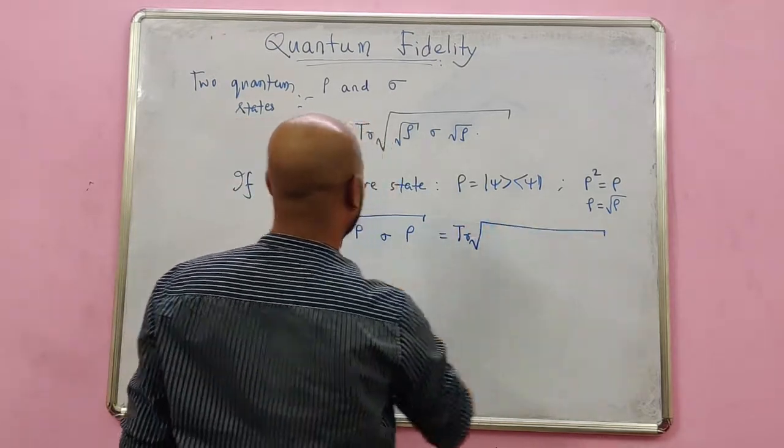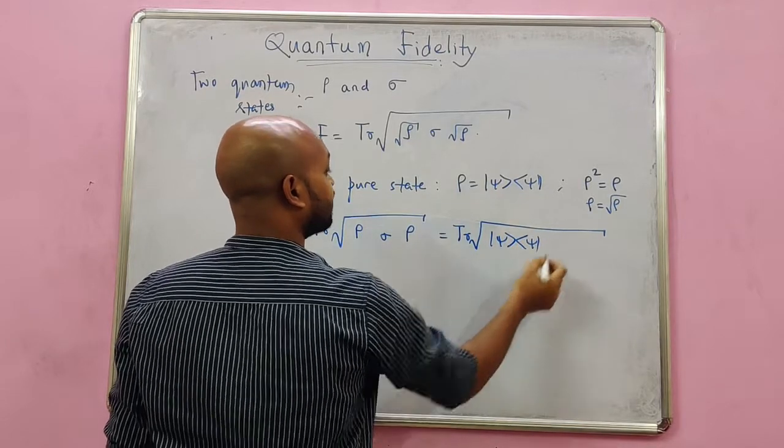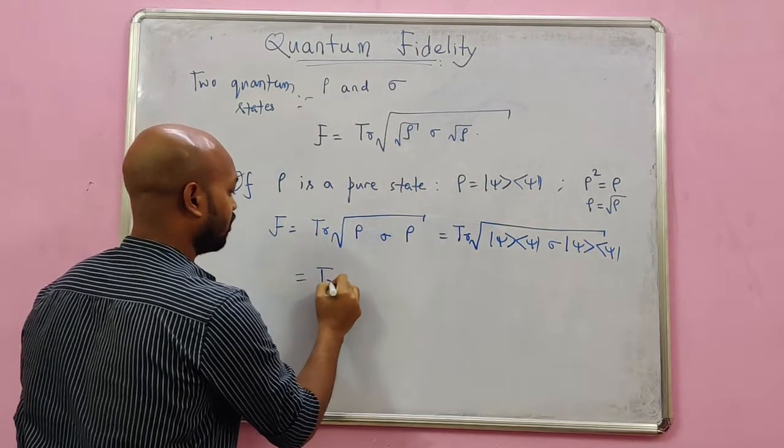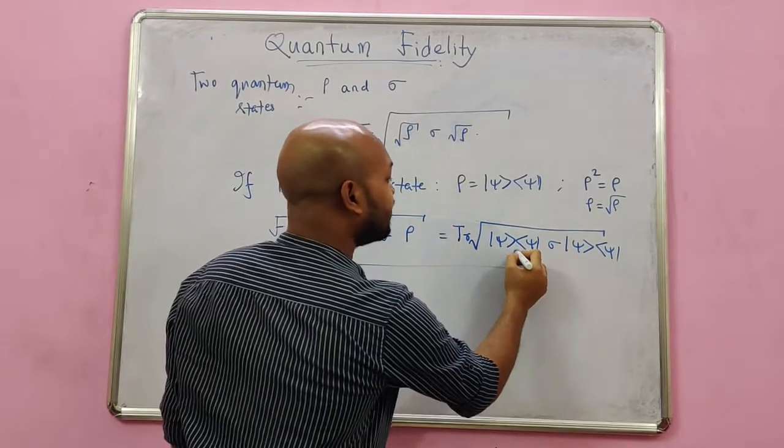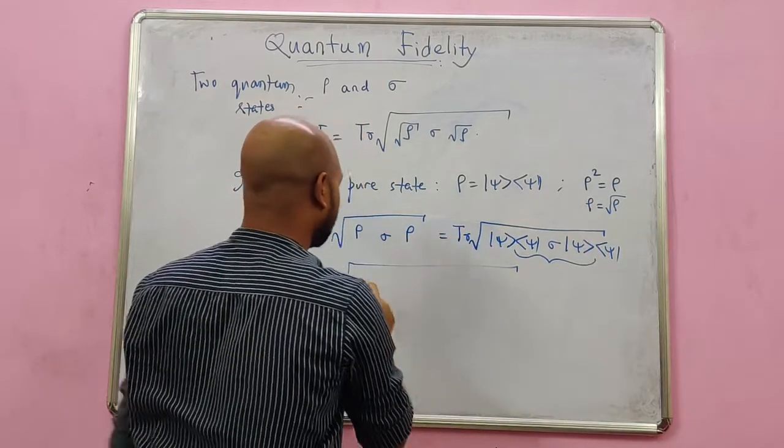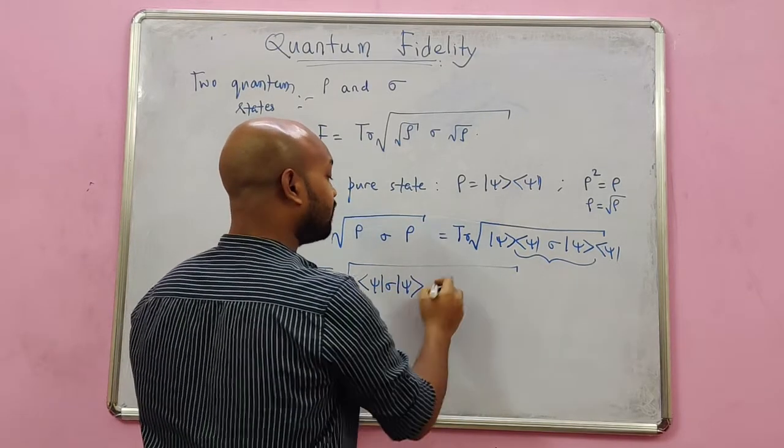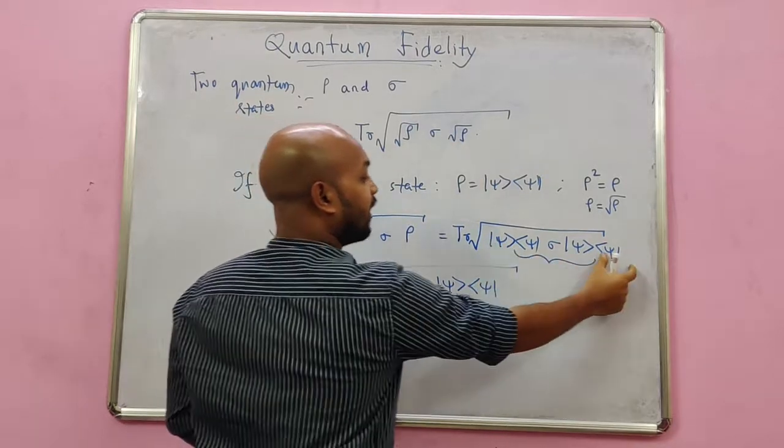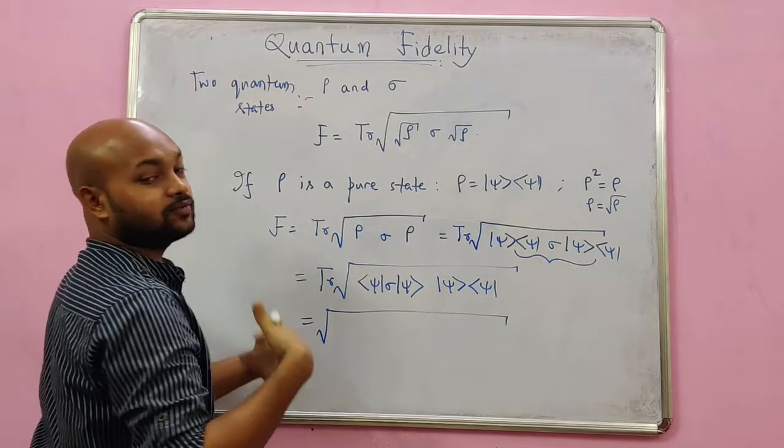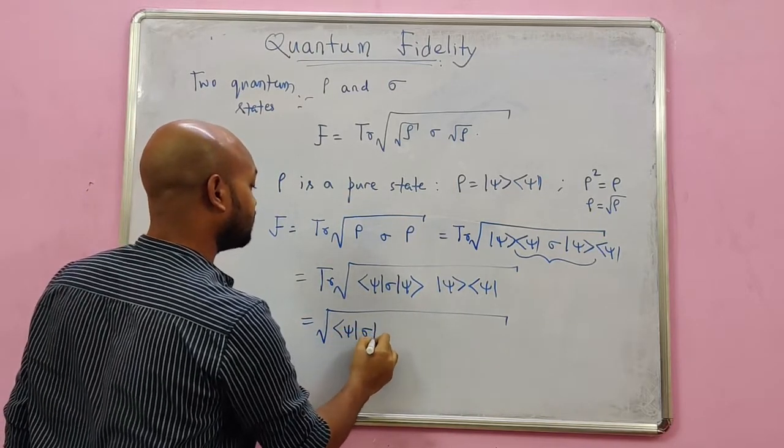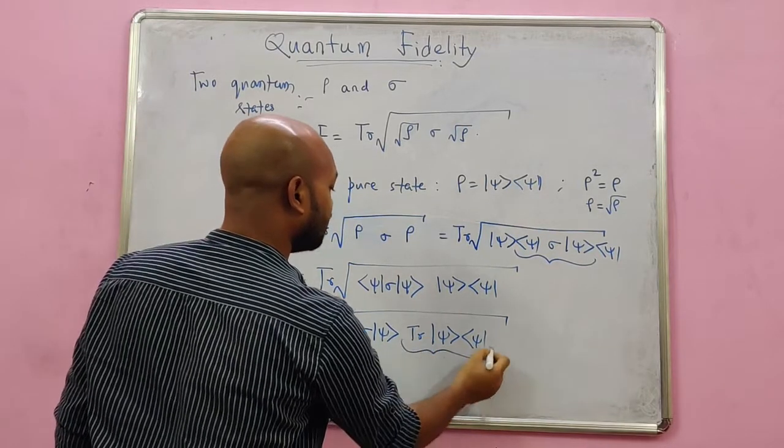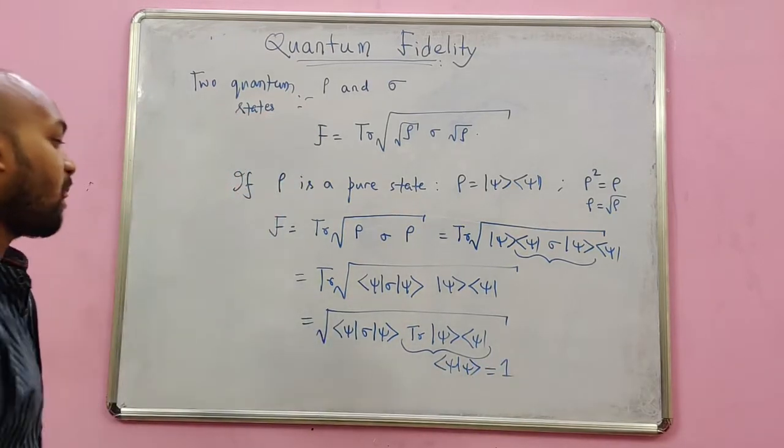Then this is trace of... rho is |ψ⟩⟨ψ|, then σ, then again |ψ⟩⟨ψ|. Now trace of square root - and see, this is the inner product, that means a number, and a number can be put to left or right, so I pull this number to the left and write it here: ⟨ψ|σ|ψ⟩. And what I am left with is this outer product. Now as we have been doing so far, I take the trace inside and operate it on the matrix. So ⟨ψ|σ|ψ⟩, and trace operates on this thing. Next, we know this result will result in a product which is equal to 1.